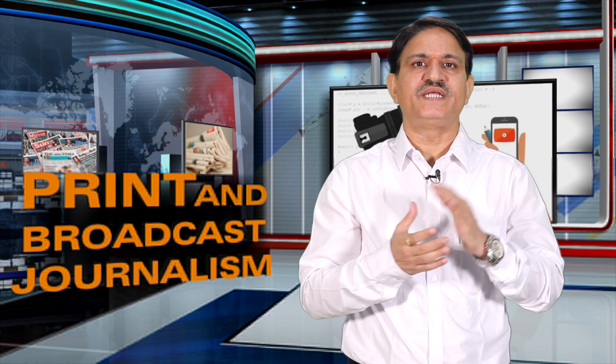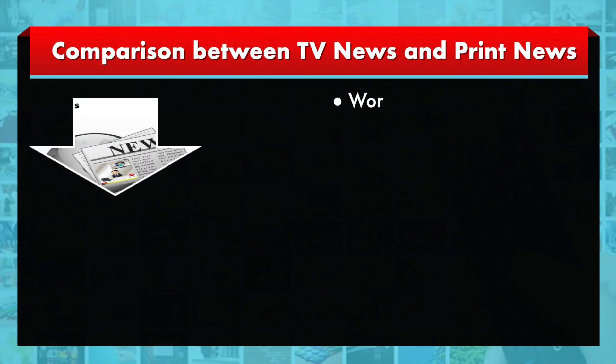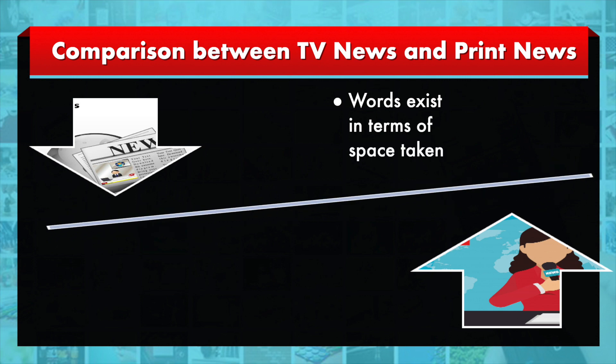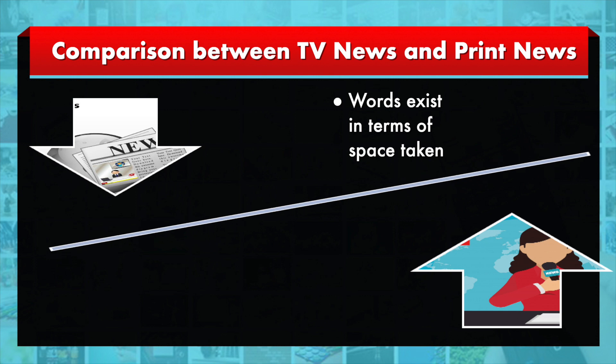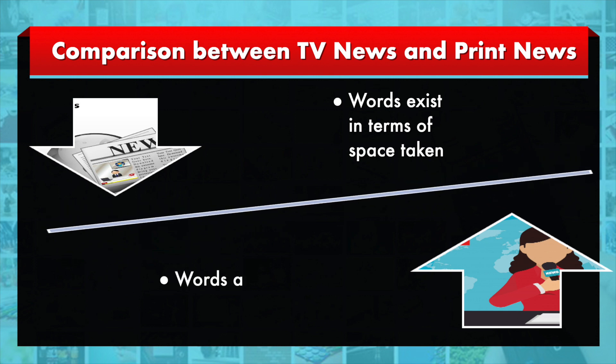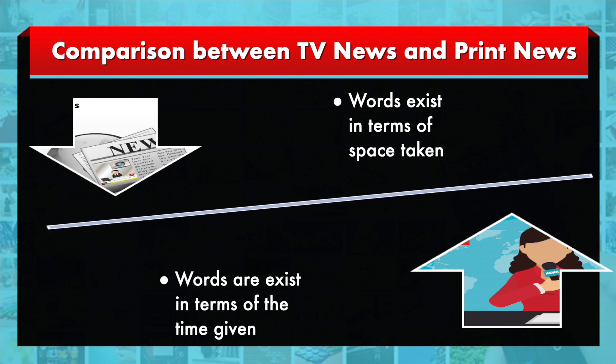Let us discuss comparisons between TV news and print news. Both TV news and print news share the same journalistic values. However, due to their inherent nature, there are major differences between the two. In print news, words exist in terms of space taken, whereas in TV news words exist in terms of time given.